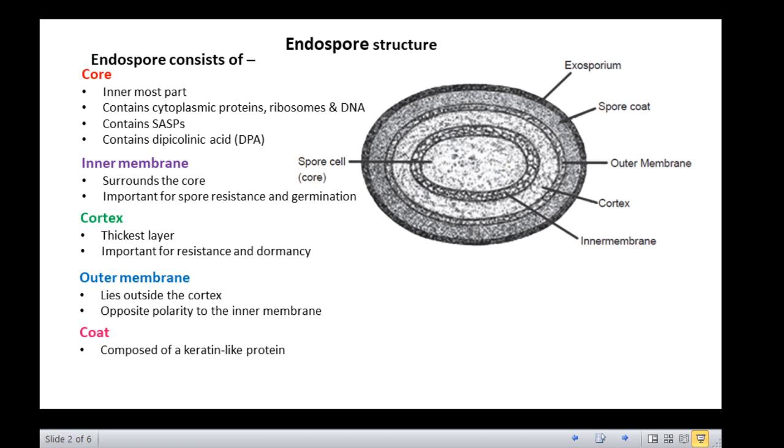The outermost layer is the exosporium. In many cells, the spore coat is surrounded by a loose membrane-like structure called exosporium. The exosporium is important for spore hydrophobicity and adherence properties.